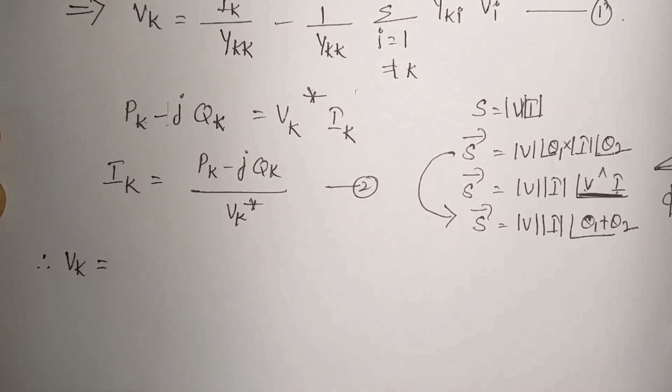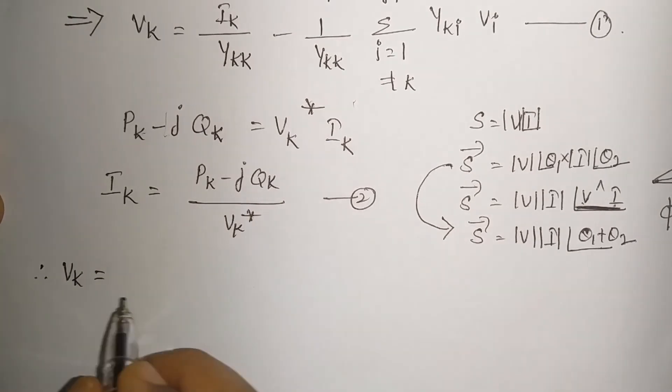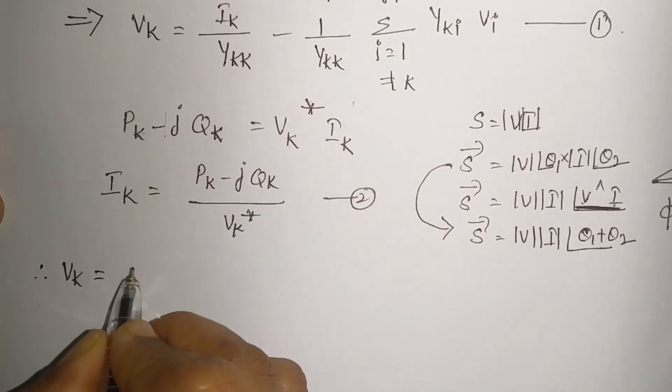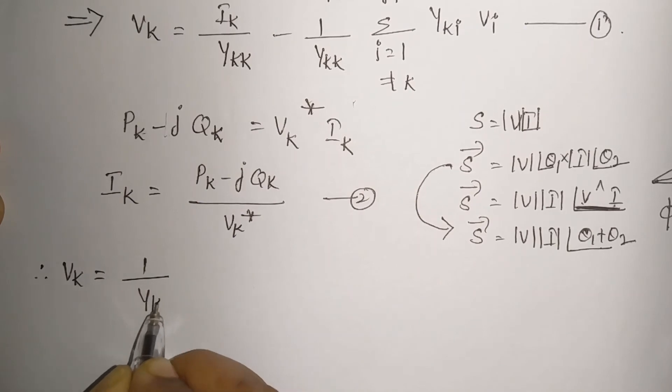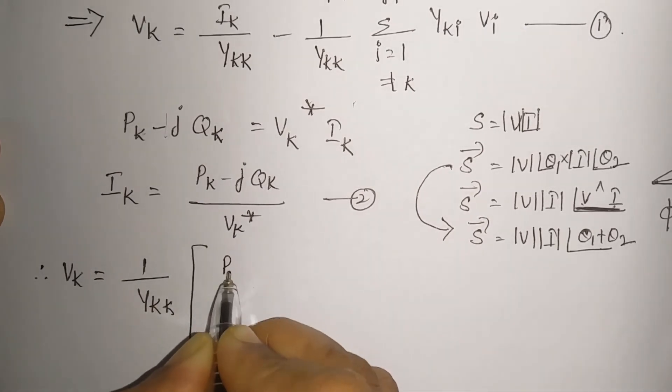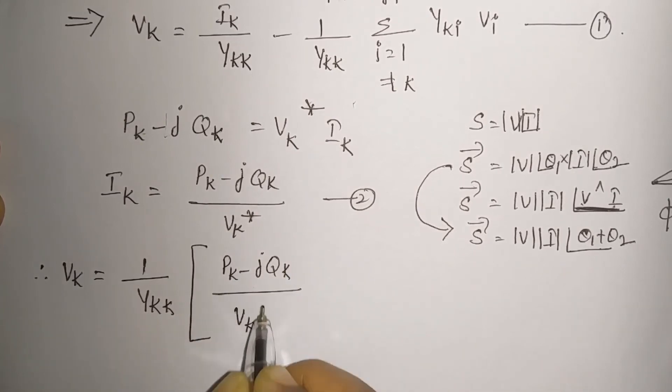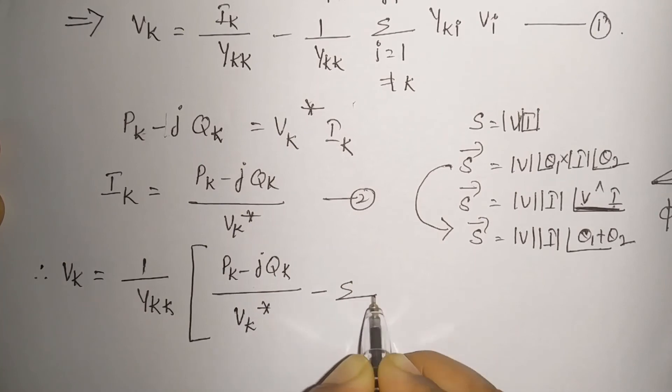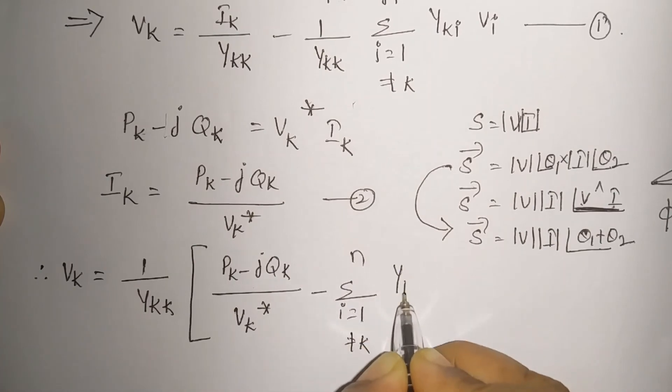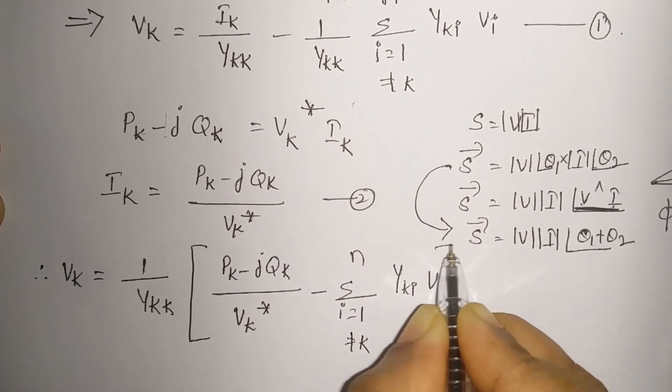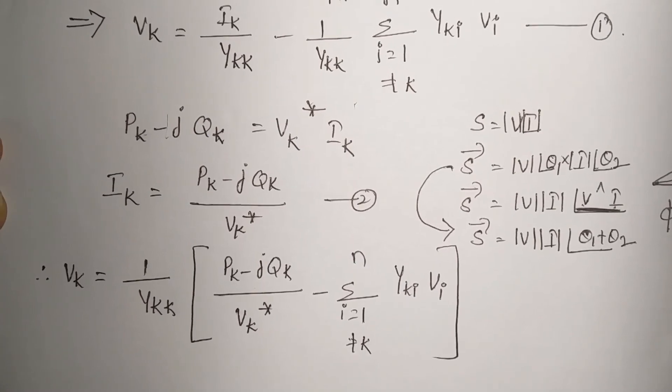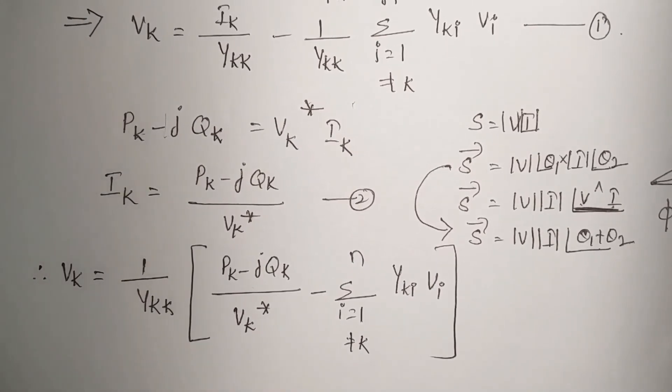What happens with Vk? Vk is equal to—instead of Ik we can write this. If we do so, the final equation for Vk will be 1 by Ykk of Pk minus jQk by Vk conjugate minus sigma, i is equal to 1 but is not equal to k to n, Yki Vi. These are called as load flow equations.